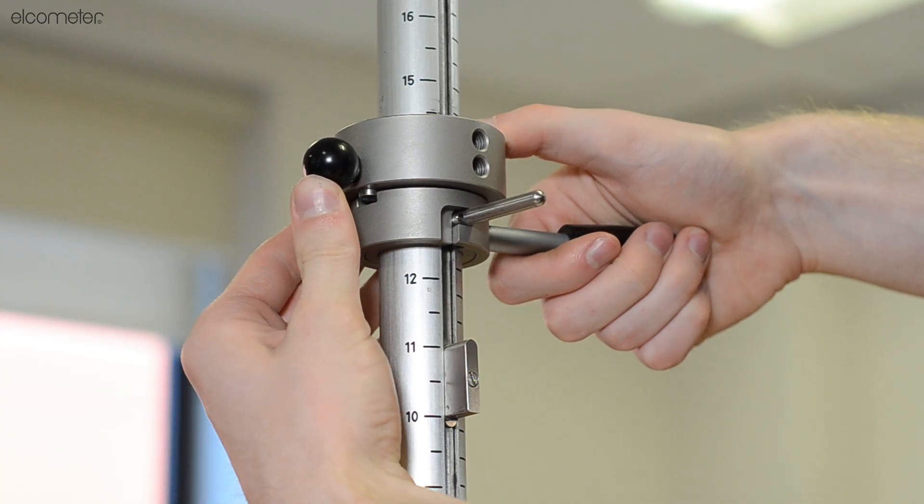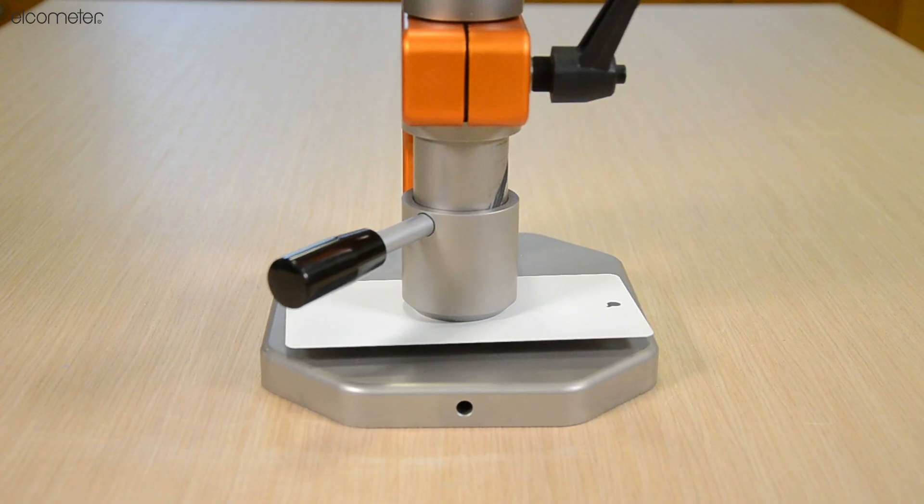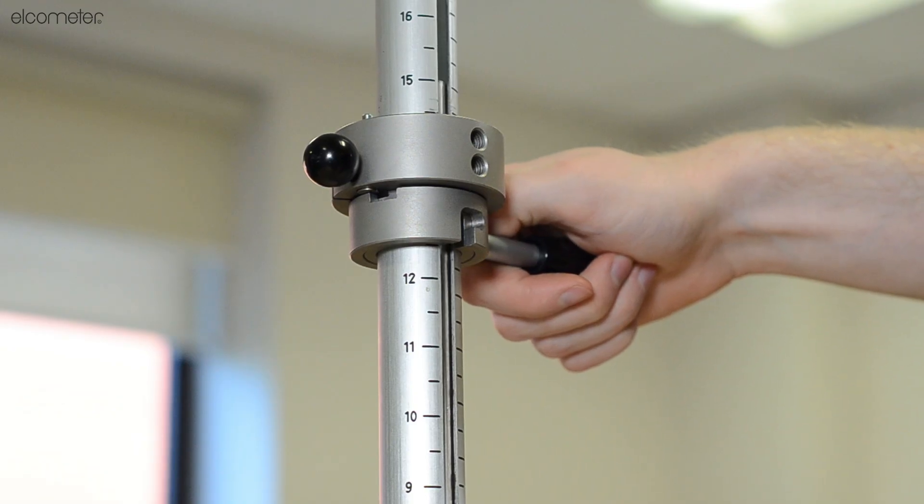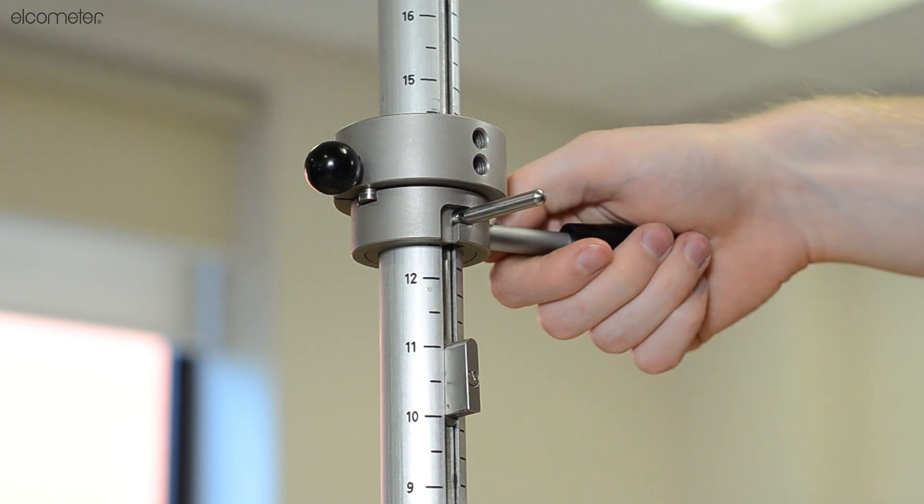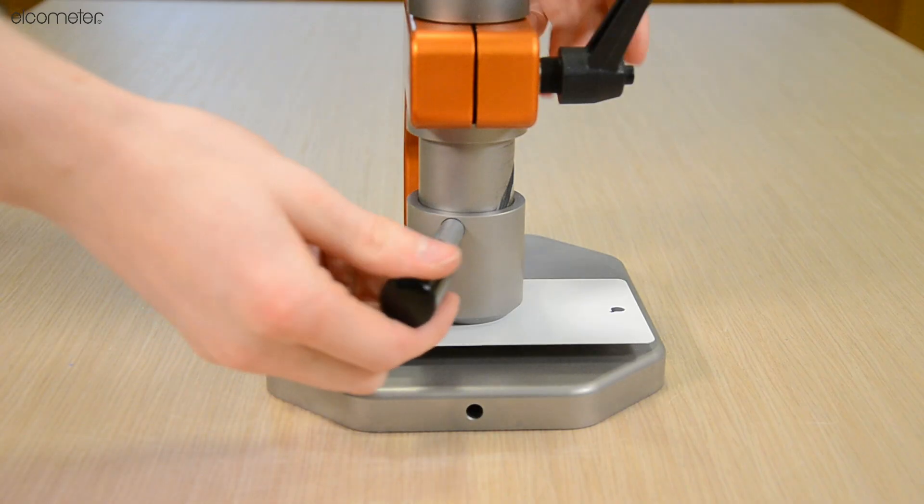Release the weight by rotating the handle on the release collar and the weight will drop. After impact, lift the weight and re-secure it in the release collar. Release the specimen clamp and remove your sample.